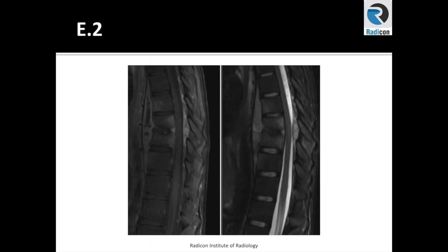Let's look at this case. It is a thoracic spine; however, it will serve the purpose. The thoracic kyphosis appears intact. There could be mild straightening present, but it is within normal limits. Body heights are maintained; however, in the mid-thoracic vertebrae, the end plates are poorly differentiated and are not discrete. There is significant abnormality of the marrow present, and you can see that despite the fat saturation, there are high signal changes present.